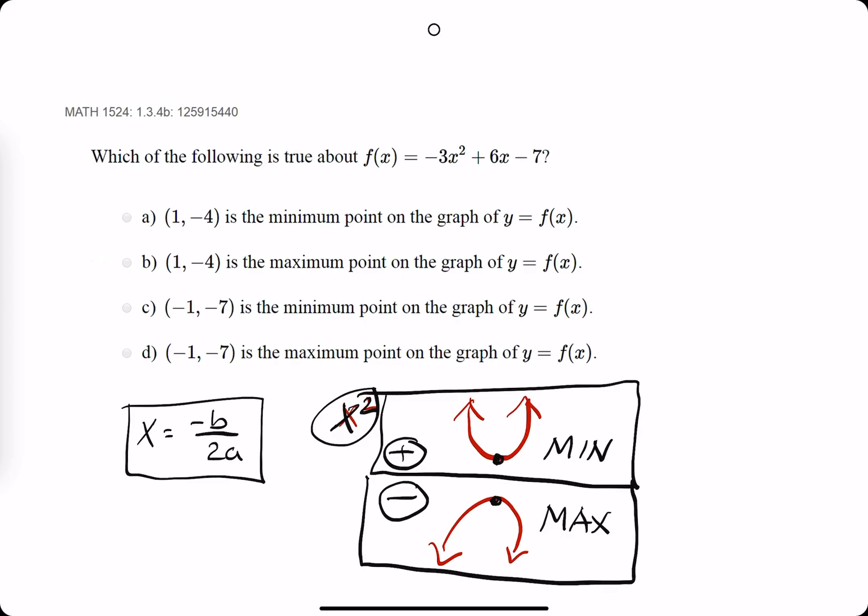So the main distinctions in these answers are the ordered pair where either the max or the min occurs and whether or not it's a max or a minimum. So the first thing we can start with is trying to identify at least the x value where either the max or min occurs.